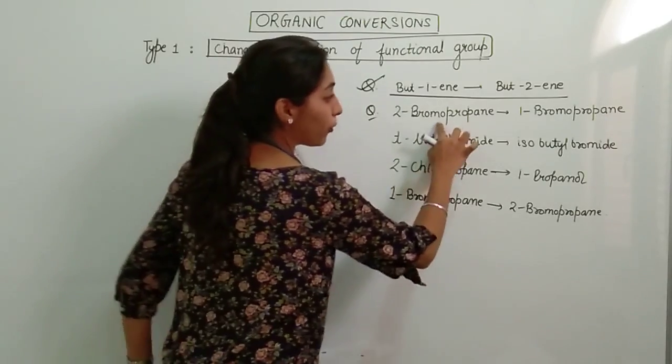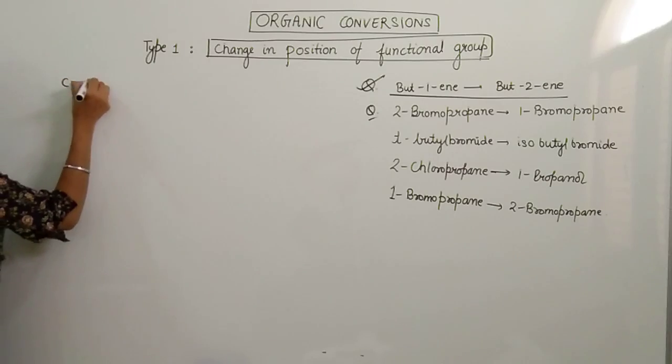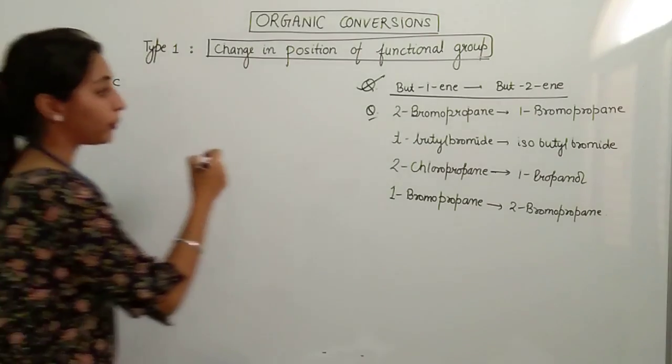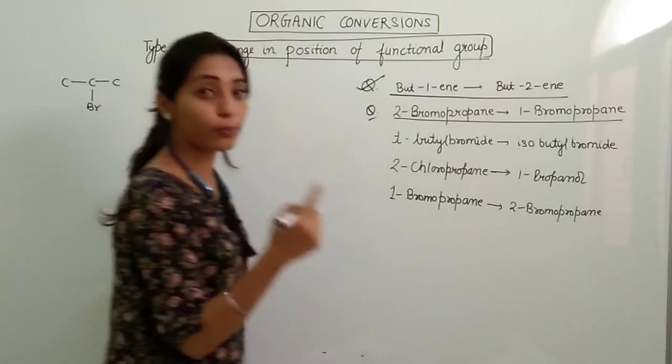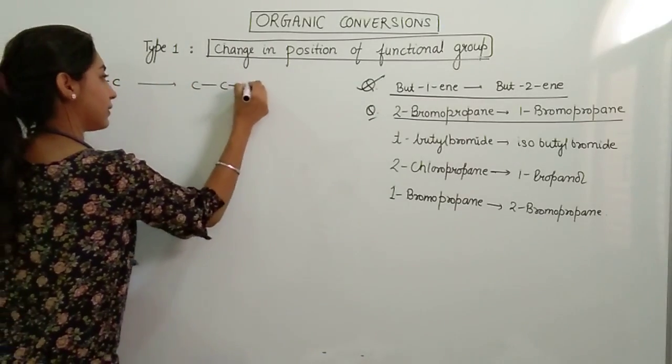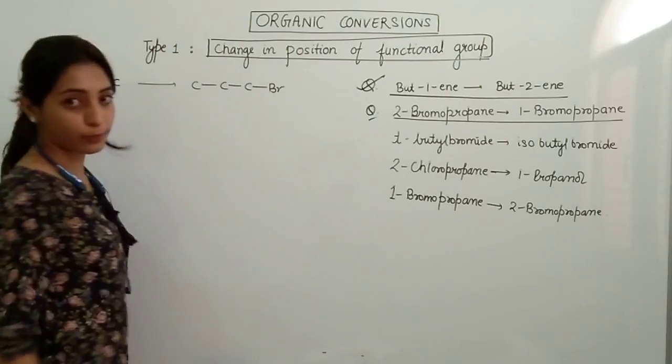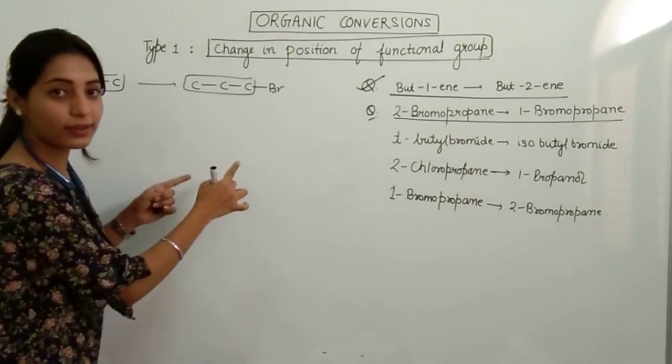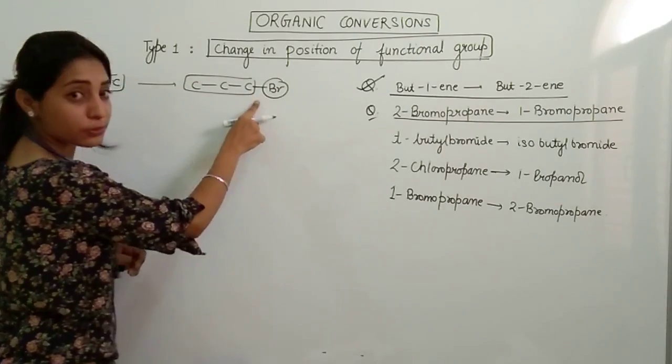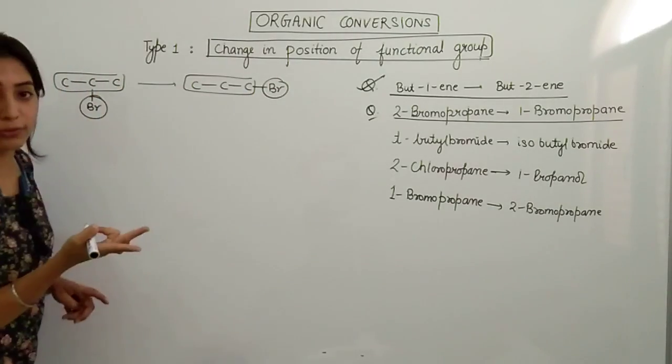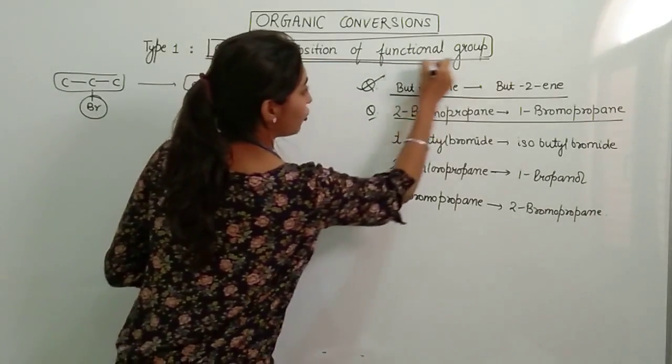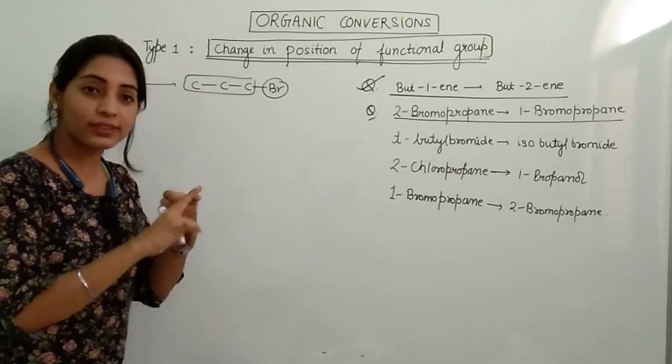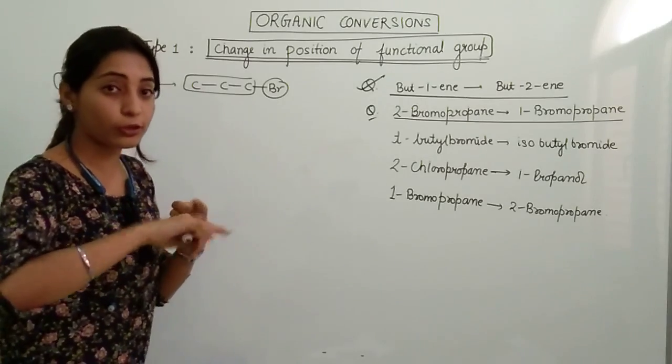The second question is 2-bromopropane. So at the second position we have bromopropane. 2-bromopropane is to be converted to 1-bromopropane. Now see, is there a change in number of carbon atoms? No. We have three, we have three. What is the change? Here Br is at first position, here at second position. So there is just a change in the position of functional group. Let's follow the same thing again.